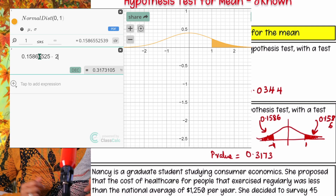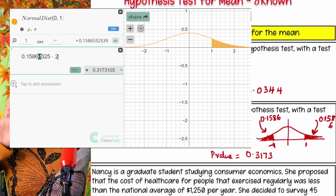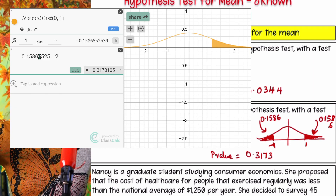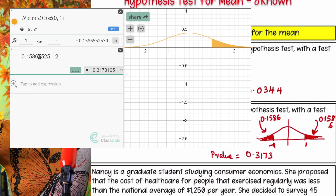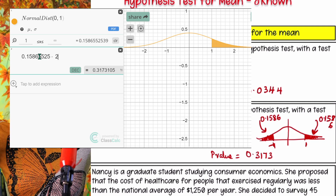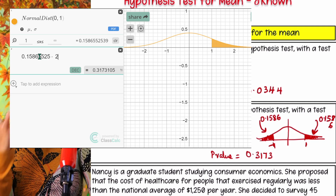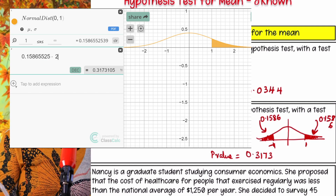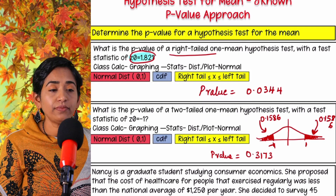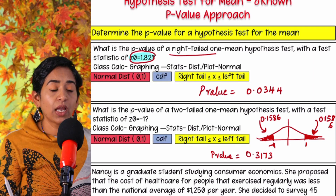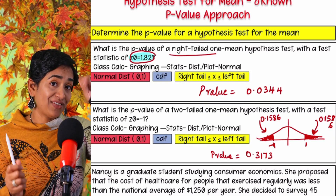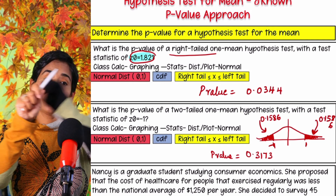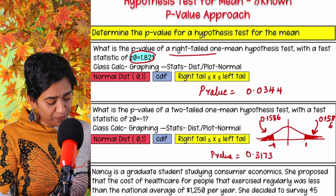You either do your left-hand side or your right-hand side test. Once you have it, you simply multiply it by two because it's two values. So for a two-tailed test: do either left-hand or right-hand, then multiply by two.